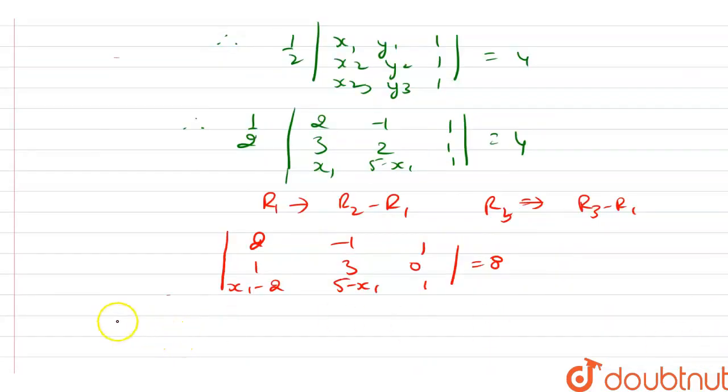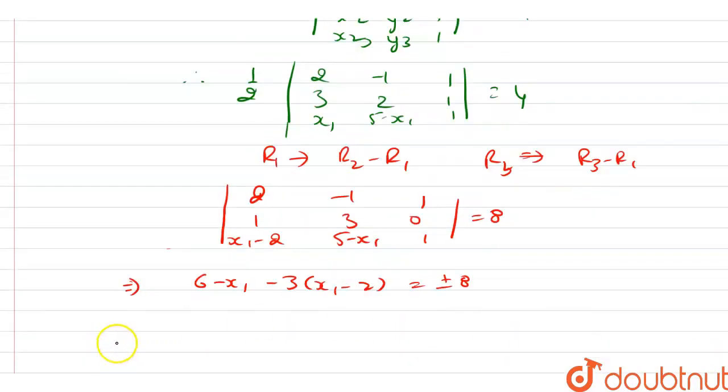Solving the determinant: 6 - x1 - 3(x1 - 2) = ±8. Expanding this gives us 6 - x1 - 3x1 + 6 = ±8, which simplifies to 12 - 4x1 = ±8.